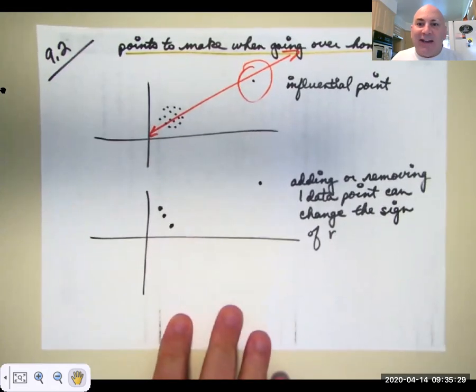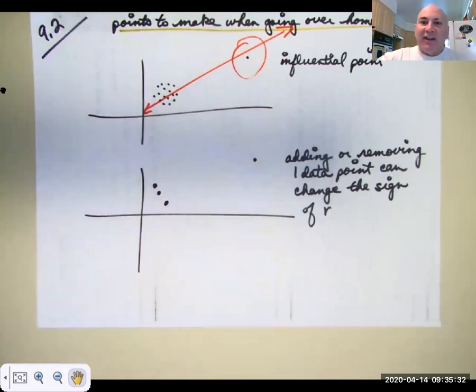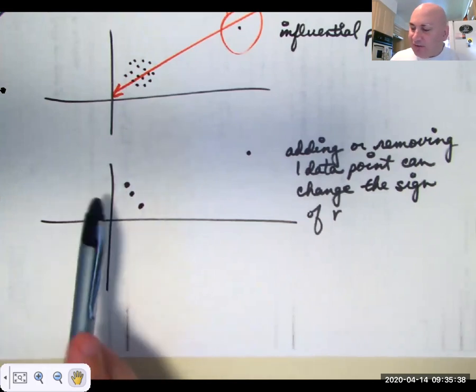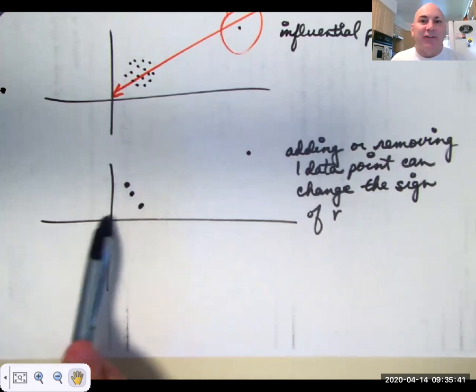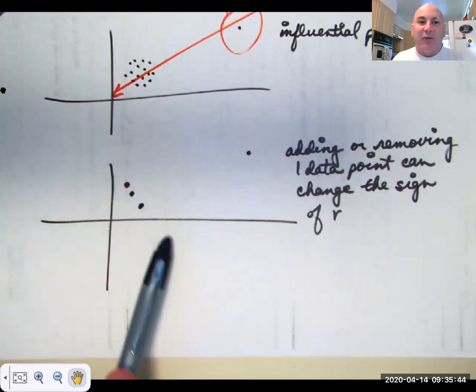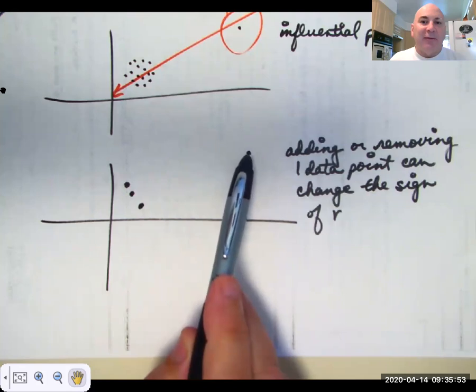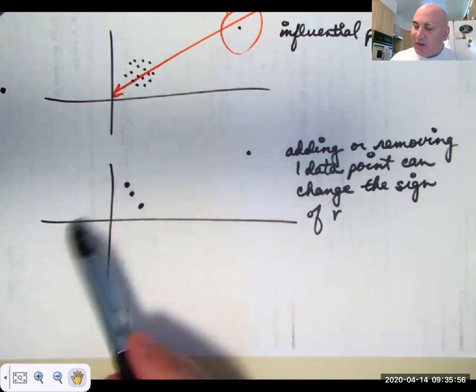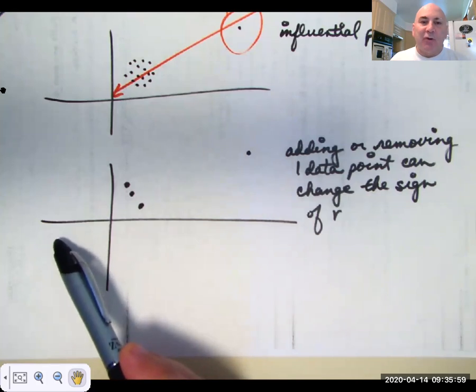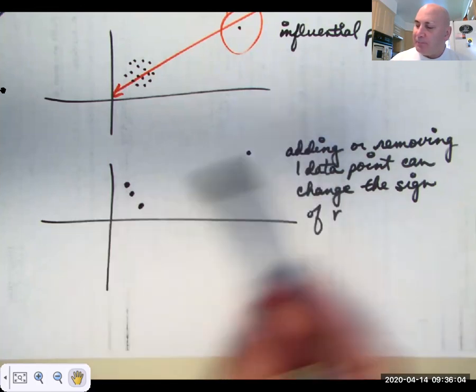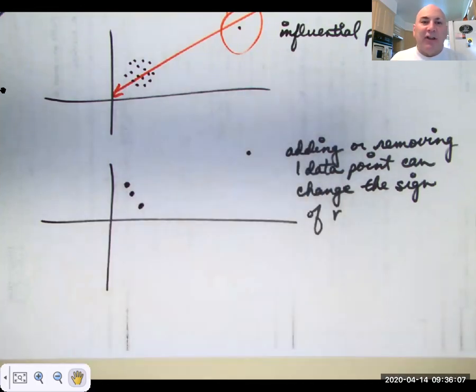Similarly adding or removing a data point can definitely change r. In fact it can change the slope of r. For instance just consider these three data points. Obviously we have a line with a negative slope going through them. Add this one influential data point and now you can see that a regression line would go like this now. It would have a positive slope. You really need to graph your data to see what's going on.